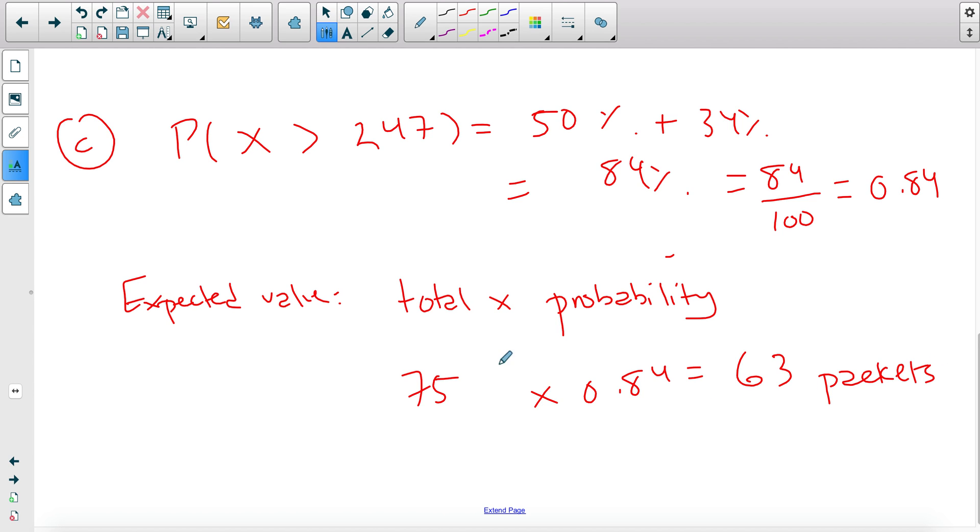What this tells you is that out of the 75 packets that he tested, we can expect that 63 of them will have a volume more than 247. Okay, so hopefully this makes more sense.